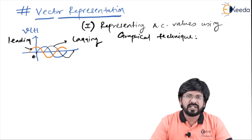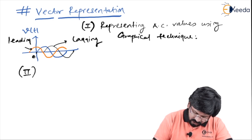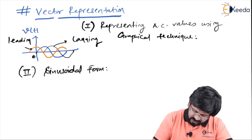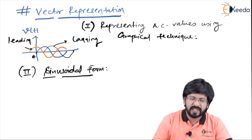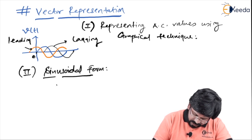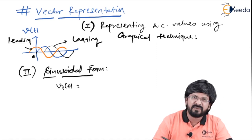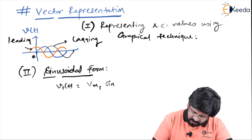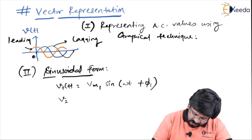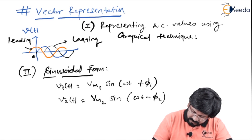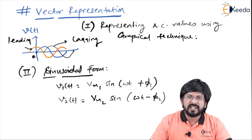When it comes to processing or mathematics, graphical representation is not sufficient. We need a particular representation in terms of mathematics, for which we have various forms. The second form is called the sinusoidal form. For example, I can represent a particular AC signal V(t) as Vm1 sin(ωt + φ1), or another signal V(t) as Vm2 sin(ωt − φ2). A positive phase indicates it is leading with respect to reference, whereas a negative phase indicates it is lagging.